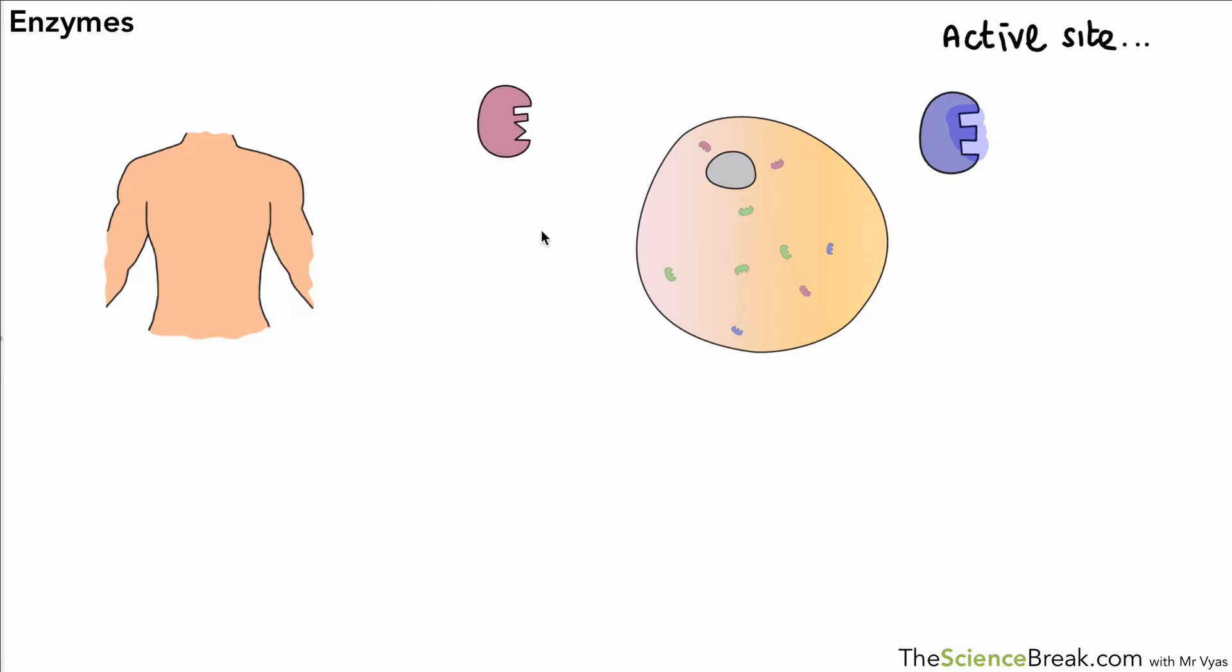We have lots of different types of enzymes, so in this diagram I've just got three different kinds, but the key point is that each type of enzyme has a different shaped active site.